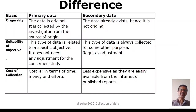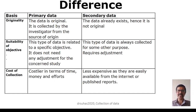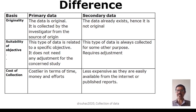Let us see the basic difference between primary and secondary data based on originality, suitability, and cost of collection. Regarding originality, primary data is original in nature because the investigator is collecting it for the first time directly from the source. It is the investigator who is responsible for collecting it. Whereas with secondary data, the data already exists — somebody else has collected it — so it is not original for the person reusing it.